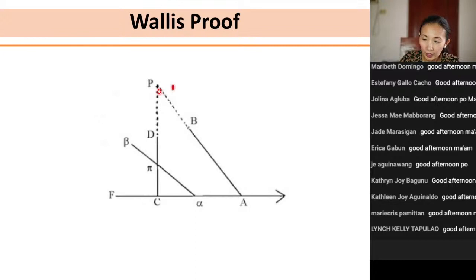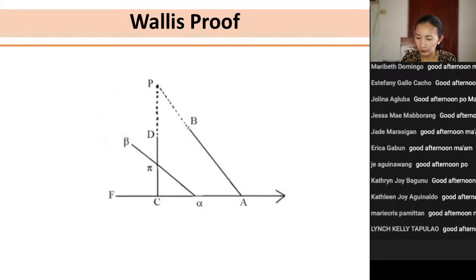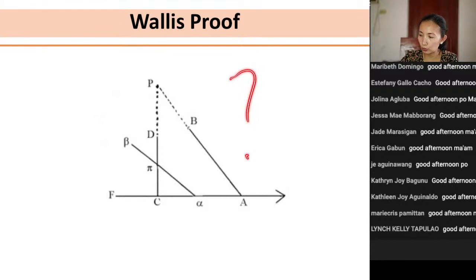However, this proof also had a fault. The original postulate that Wallis based the proof on was logically equivalent to Euclid's fifth postulate — therefore he had assumed what he was trying to prove, making his proof invalid. That is the second failed attempt.